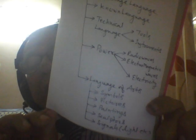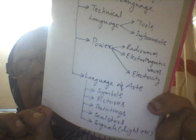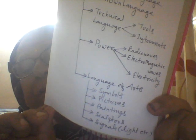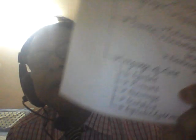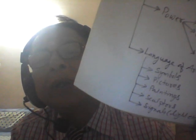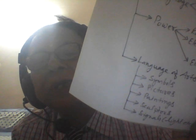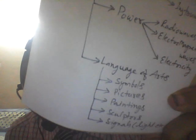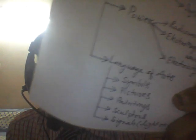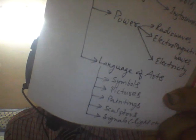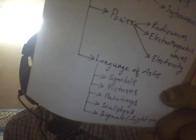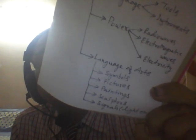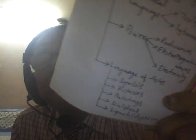Language of art — in this context, we take into consideration symbols. Sometimes pictures tell a story; paintings also tell a story. Sculptures give messages as well. Similarly, signals — where we use light signals for communication. If signals are not properly used, that affects our communication.